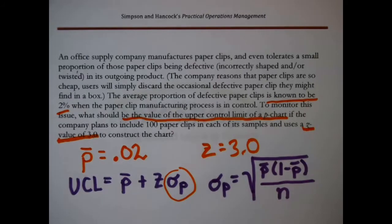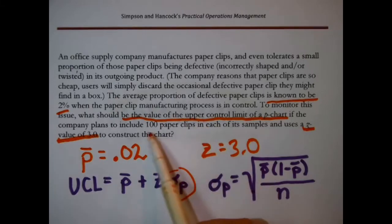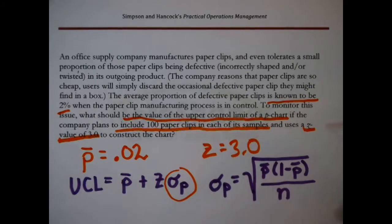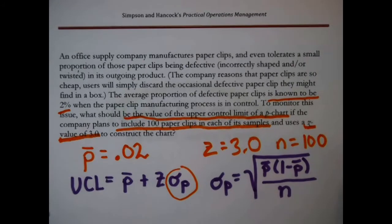Lower case n is always the size of the sample. Well P-bar we had, but actually I can see it in the problem, because it says they plan to include a hundred clips in each of the samples, that's perfect, that's the size of the sample. Now we have everything that we need, but we have to fill this out first.